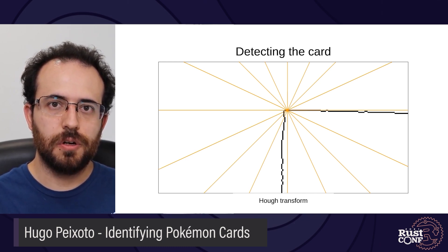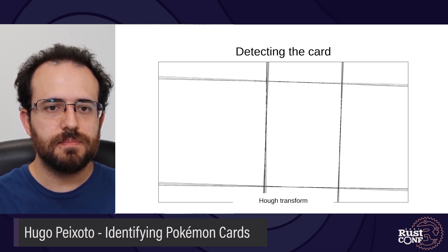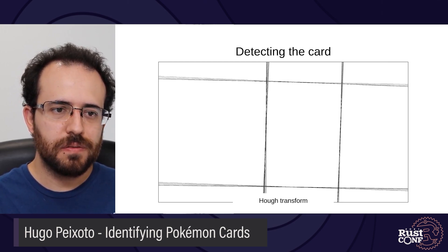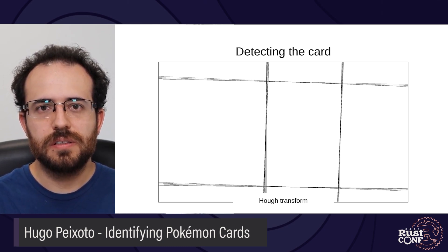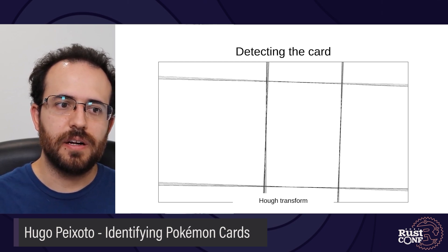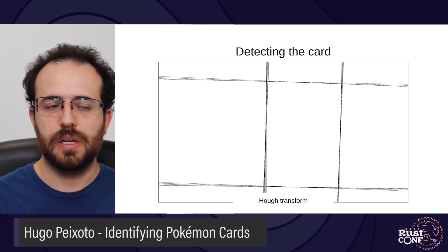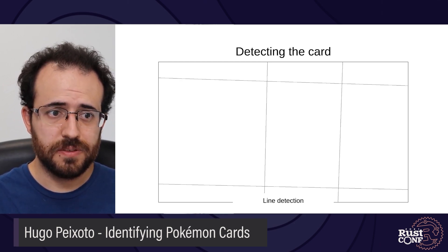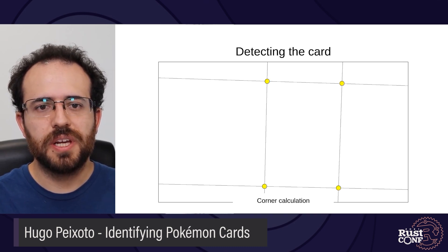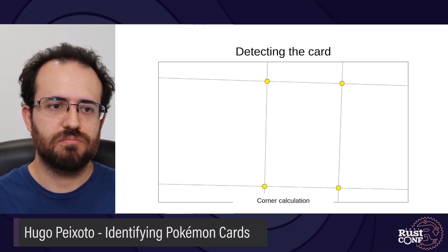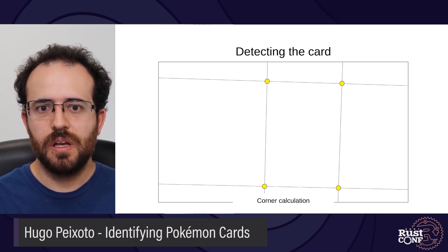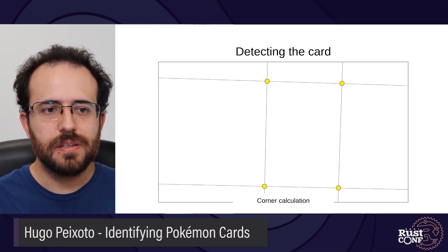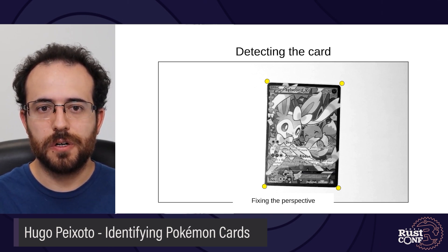If we take those lines and draw them, we get this — it's pretty close to what we wanted but not quite there yet. To get rid of extra noise, we can cluster similar lines together and average them out. Any lines that are similar enough get clustered together. If we do that, we get our intended result. With these lines, we can calculate the intersection points by going through every pair of lines, calculating the intersections, and discarding any points that fall outside our image. These four points represent the four corners of our card.